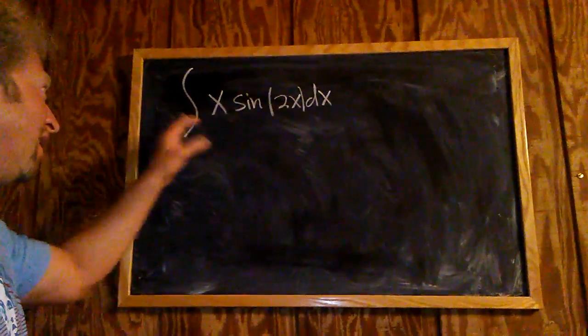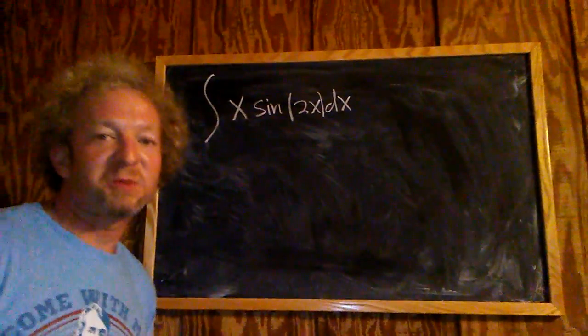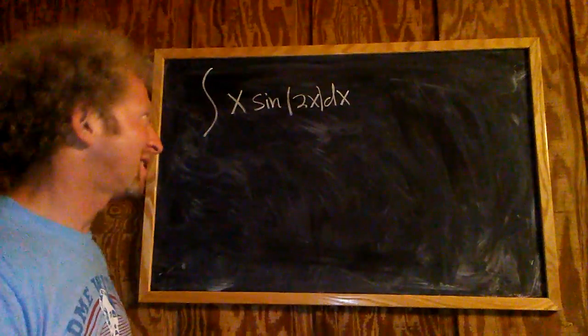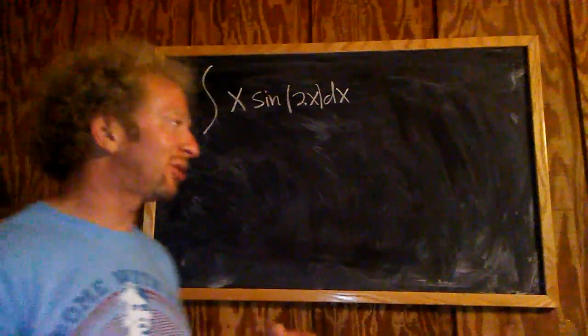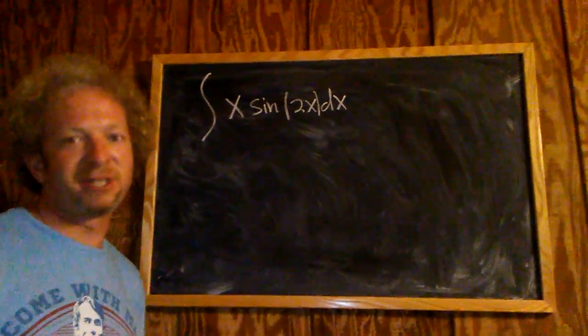An indefinite integral, and we have the integral of x times the sine of 2x with respect to x. So this problem can very easily be done using tabular integration, so I want to give you a heads up on that. Tabular is the way to go, but I want to show you how to do it the longer way using integration by parts, just as a quick refresher on integration by parts.